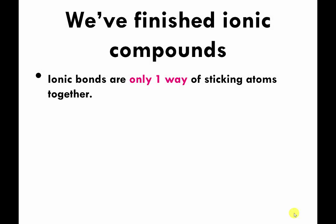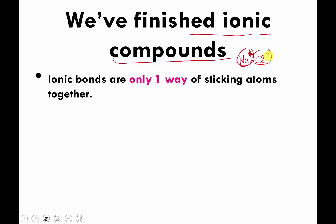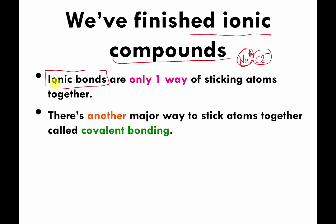As mentioned in the previous video, we are done introducing ionic compounds. Ionic compounds are made of atoms that stick together because they have opposite electrical charges — the best example being table salt, made of sodium (charged +1) and chloride (charged -1). That attachment is called an ionic bond. There is another major way of sticking atoms together called covalent bonding, which we are going to talk about now.